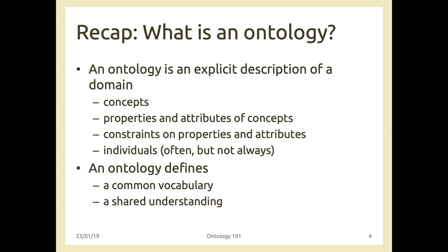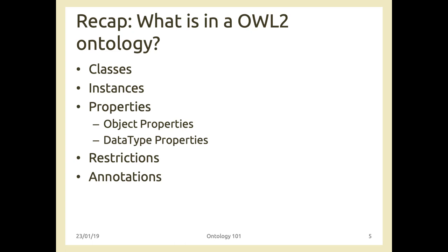An ontology is an explicit description of a domain that consists of concepts, properties and attributes of those concepts, optional constraints on properties, and individuals. An ontology defines both a common vocabulary and a shared understanding of a specific domain. In OWL, you have classes, sometimes instances, object properties or datatype properties, restrictions, and in current practice also annotations.